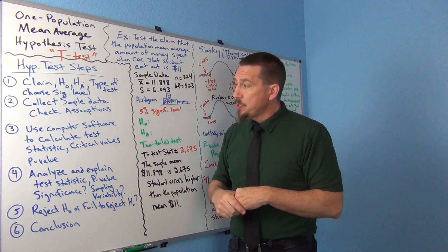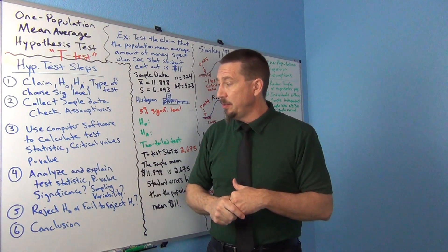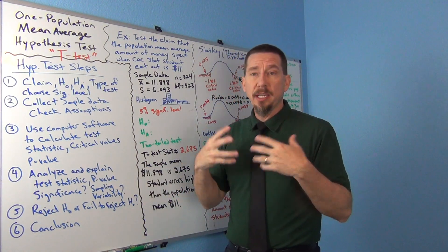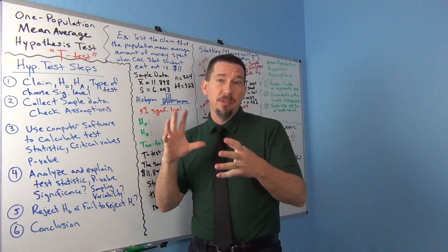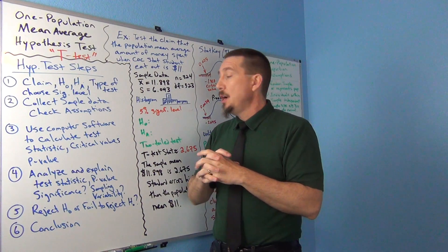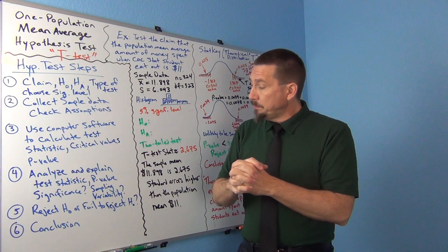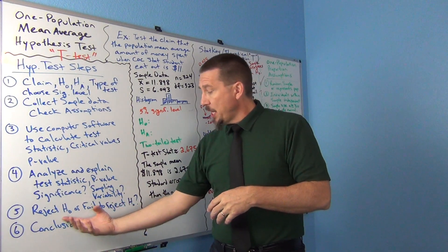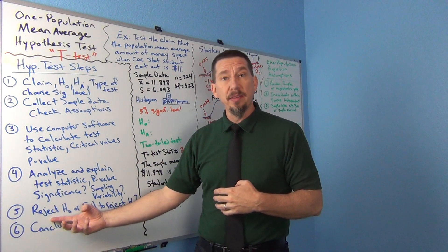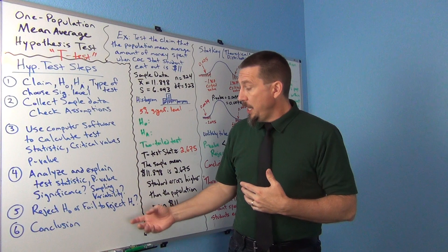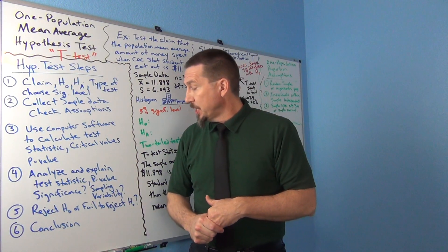Once we get the numbers, now it's the hard part of doing all this analysis, trying to figure out what are all these numbers, the test statistic and the p-value telling us. Is it significant? Does the sample data significantly disagree with the null hypothesis? Or could it just be sampling variability or random chance? We'll be able to reject the null or fail to reject the null. If the p-value was lower than the significance level, we would reject the null hypothesis. If the p-value was higher than the significance level, we would fail to reject the null hypothesis.